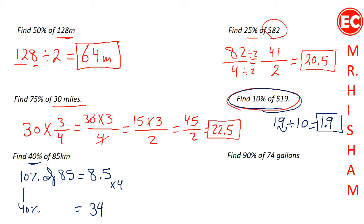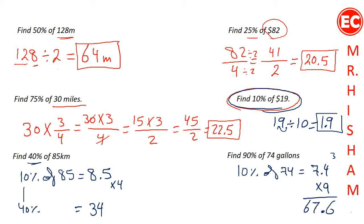To find 90% of 74, first find 10% of 74, which is 7.4. Then multiply 7.4 by 9: 9 times 4 is 36, write 6 and carry 3; 9 times 7 is 63, plus 3 is 66. Place the decimal point to get 66.6. So 90% of 74 is 66.6.